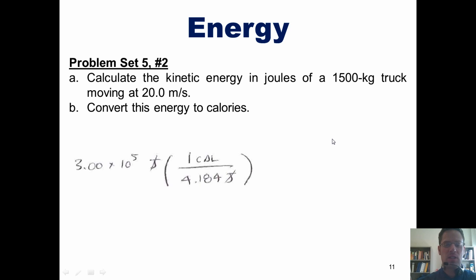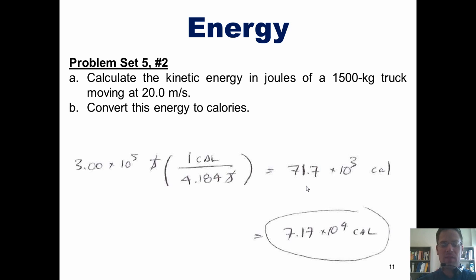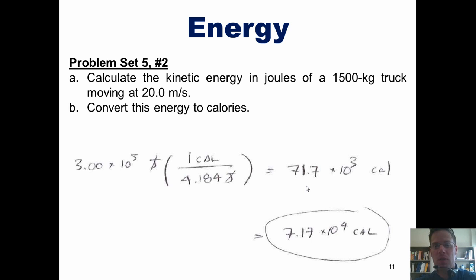Finishing this conversion gives 71.7 times 10 to the third calories, which equals 7.17 times 10 to the fourth calories. In doing this problem, you should remember, as stated in the previous lecture, that calories with a lowercase c is different from Calories with an uppercase C, which are the type of calories used in nutrition.